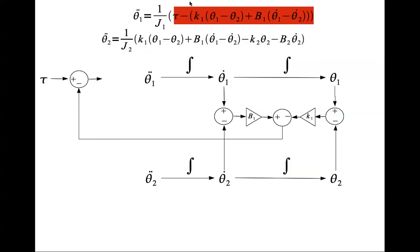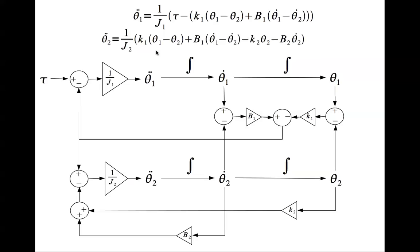Now that gets subtracted from tau, that is all this, and then it's scaled by 1 by J1. You can do the same thing for this and that's your complete graphical representation. If you notice, this term here is right here, and these two terms are this and this right here, and they get scaled by 1 by J2 and that equals theta 2 double dot.